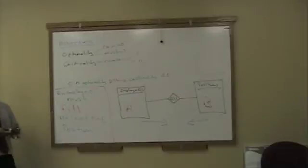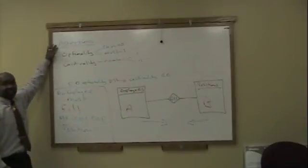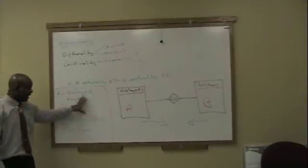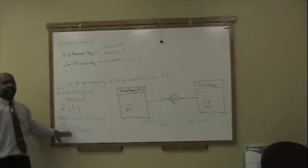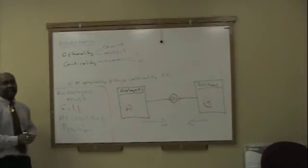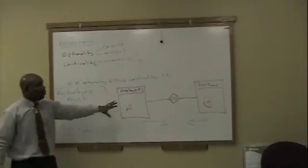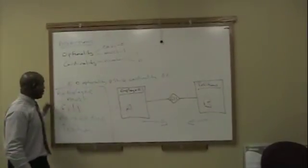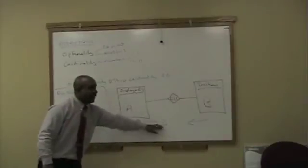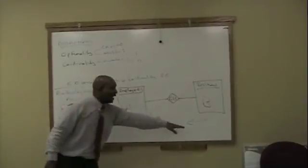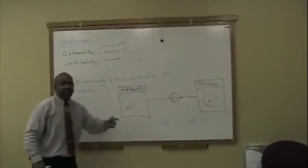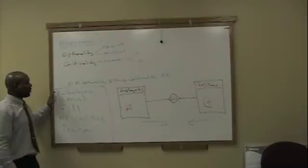Your assertion is a simple sentence. This must be factual, and you have to check it back with the client — the person you're designing the database for. For every relationship you will have two of these. I've just done it one way, looking from entity A to entity B. We will then go back and look at it the other way. Each relationship gives you two assertions — this is just the first one.